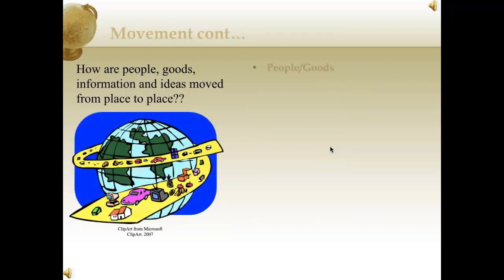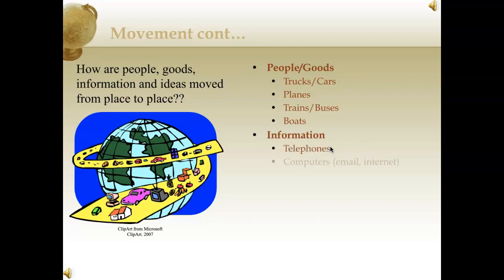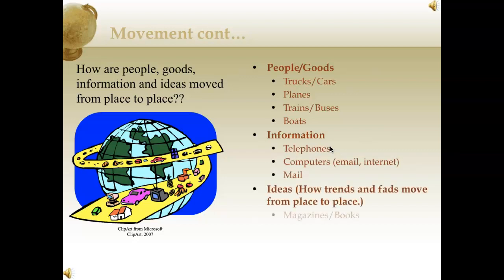Movement continued. Think about how people, goods, information, and ideas are moved from place to place. When you look at people and goods, obviously trucks, cars, planes, trains, buses, and boats help move things from point A to point B. With information, telephones, computers, email, internet, and mail also help information move pretty fluidly. And when it comes to basic ideas and how trends and fads move from place to place, magazines, books, radio, TV, and the media help that type of communicational movement take place as well.